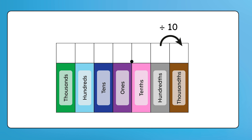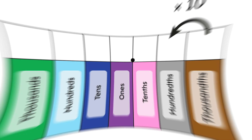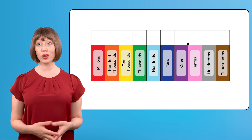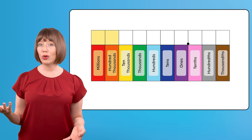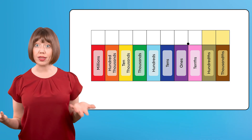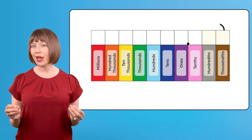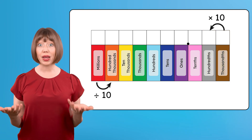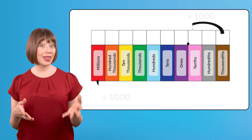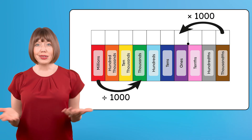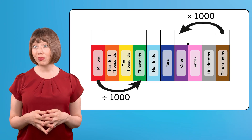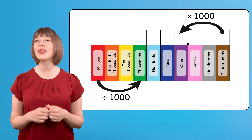Just like with whole numbers, this pattern continues in decimals. Every time we move one place to the right, we divide by ten, and if we move left, we multiply by ten. So whether we're working with really large numbers like millions, or really small numbers like thousandths, we can use the same pattern of multiplying or dividing by ten, one hundred, one thousand, or more, depending on how many places and which direction we move on the place value chart.